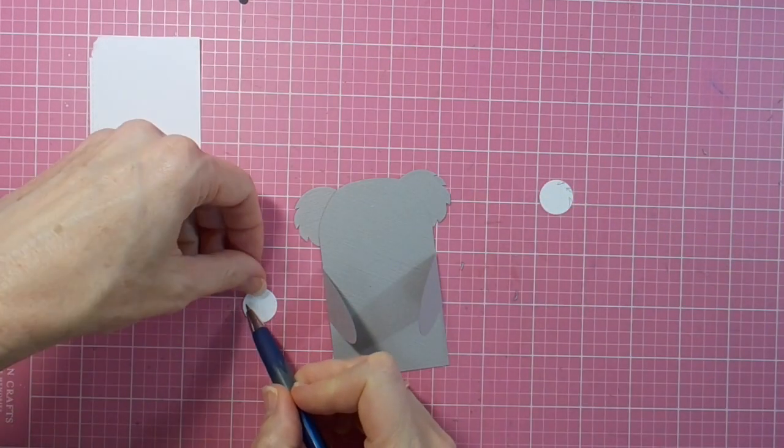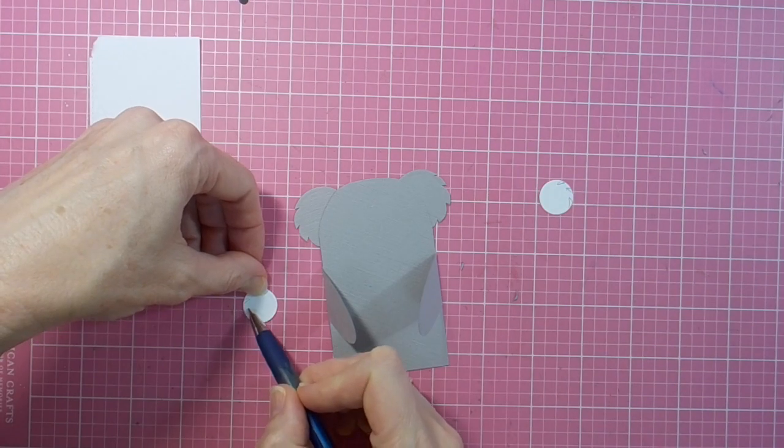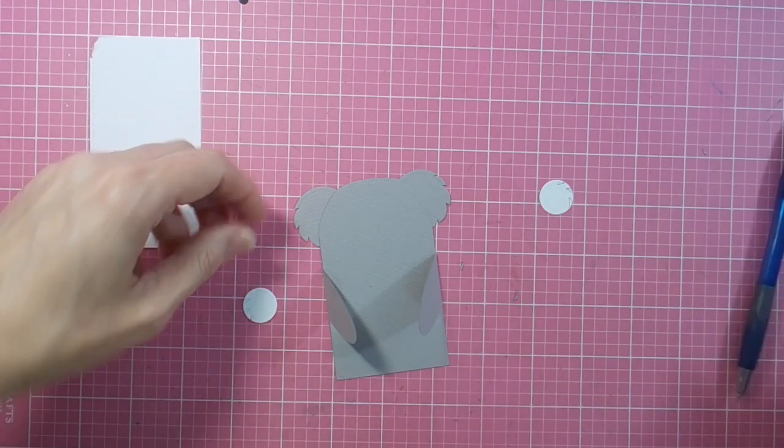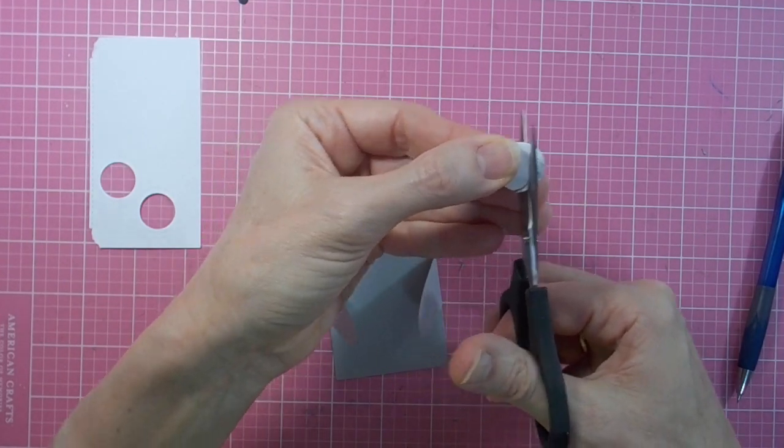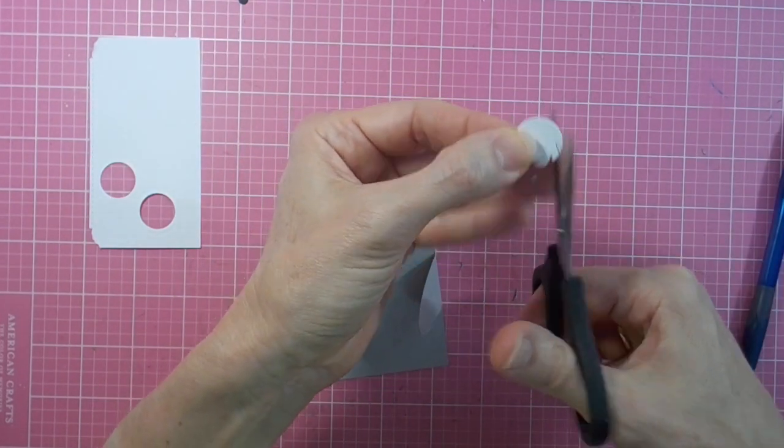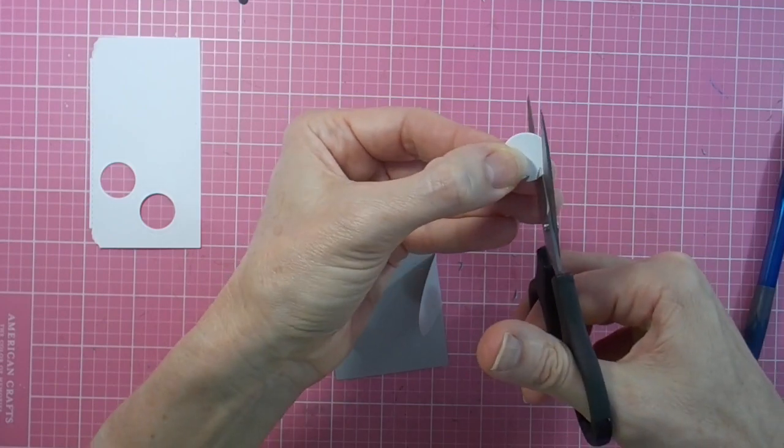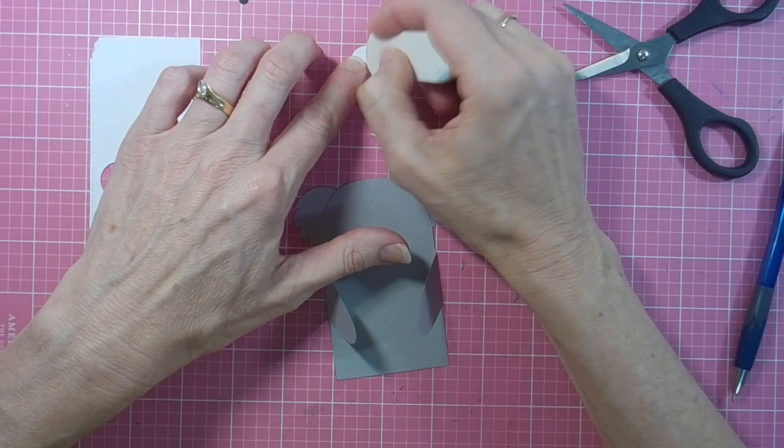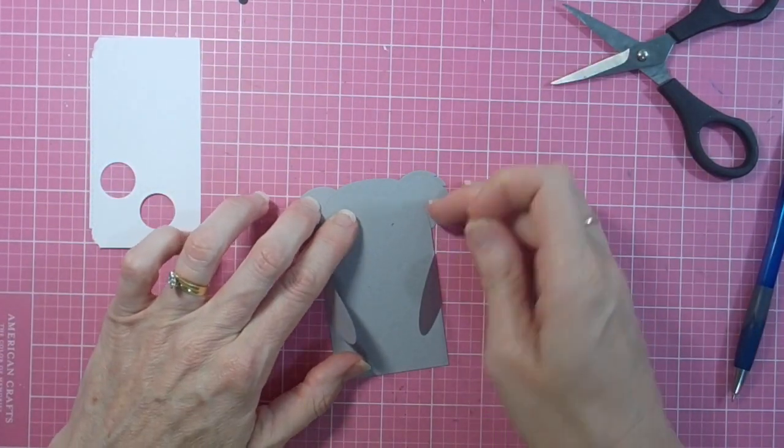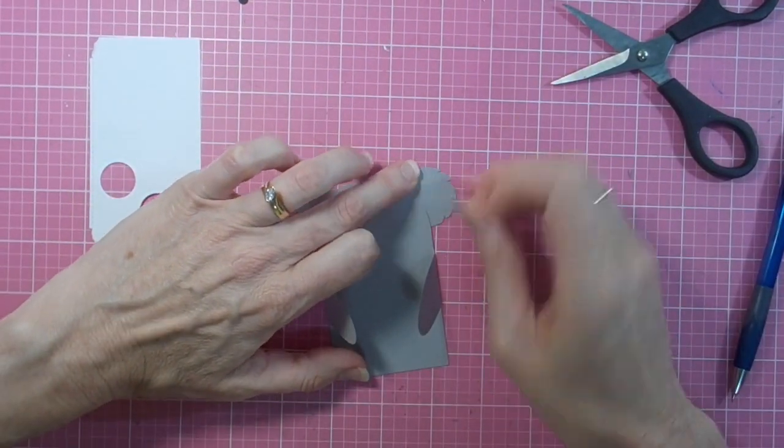Then I used the smaller circle die in that stack and I'm going to do the same, just cut some little spiky bits, fluffy bits around the edge there. We end up with some nice cute fluffy ears for our koala. I do that with both of the white circles and lay them all down to make sure that they look okay together.